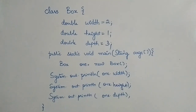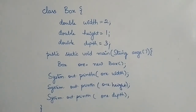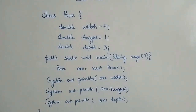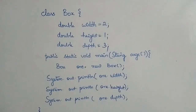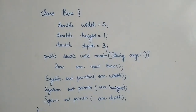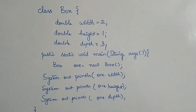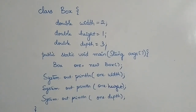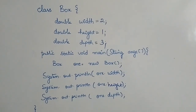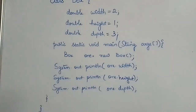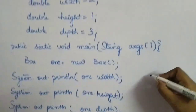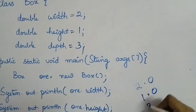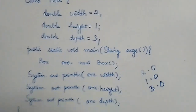Say during declaration of the instance variables I initialize them: double width = 2, height = 1, depth = 3. In this case the default constructor will be called, but these values — 2, 1, and 3 — will be initialized rather than the default values. So the output of this program will be 2.0, 1.0, and 3.0.